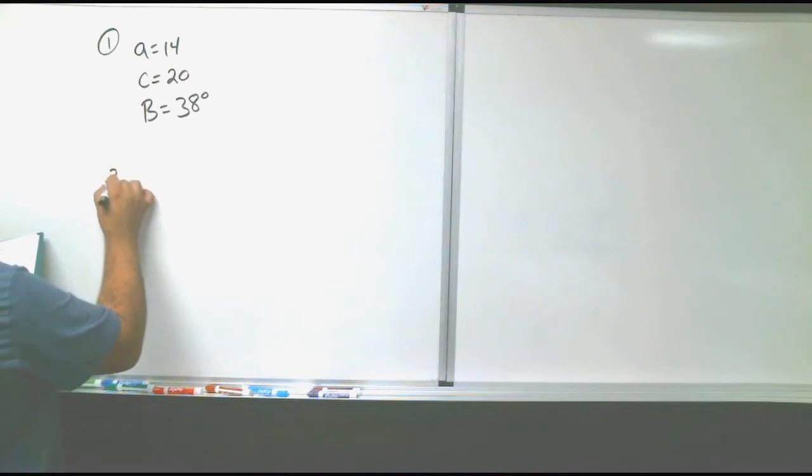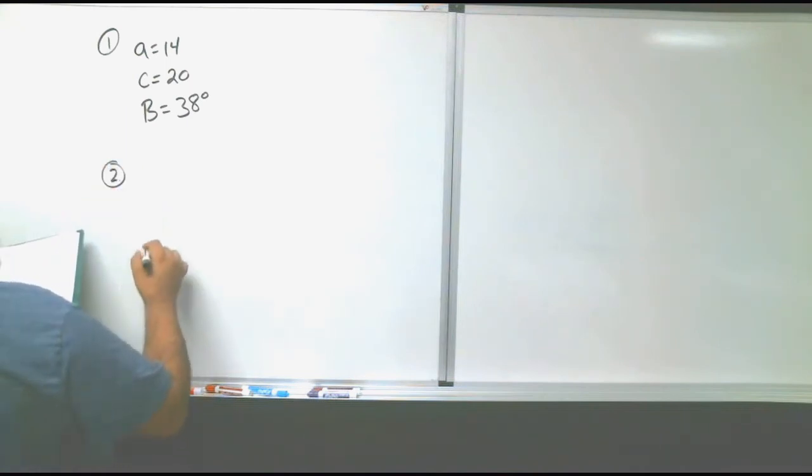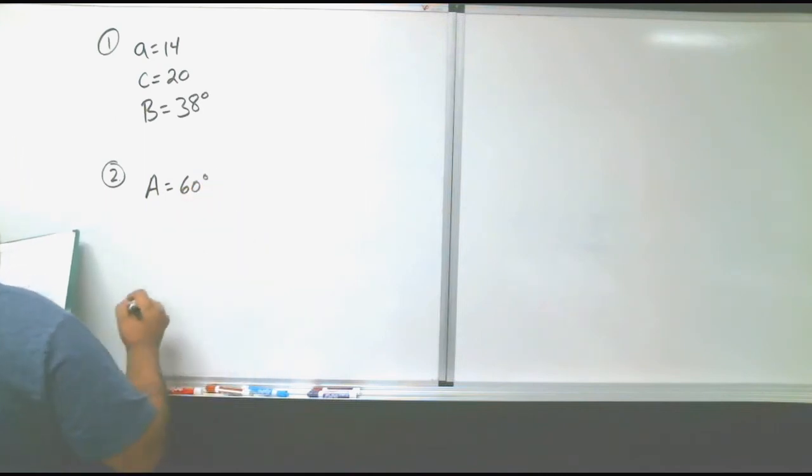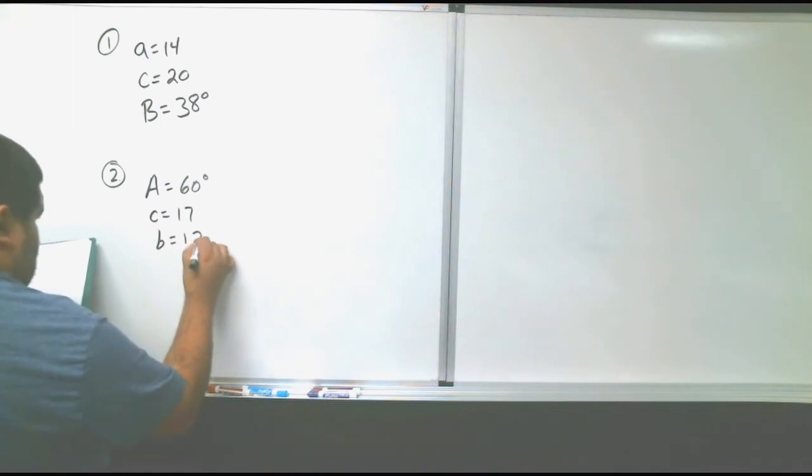Number two: A equals 60 degrees, little c is 17, and little b is 12.